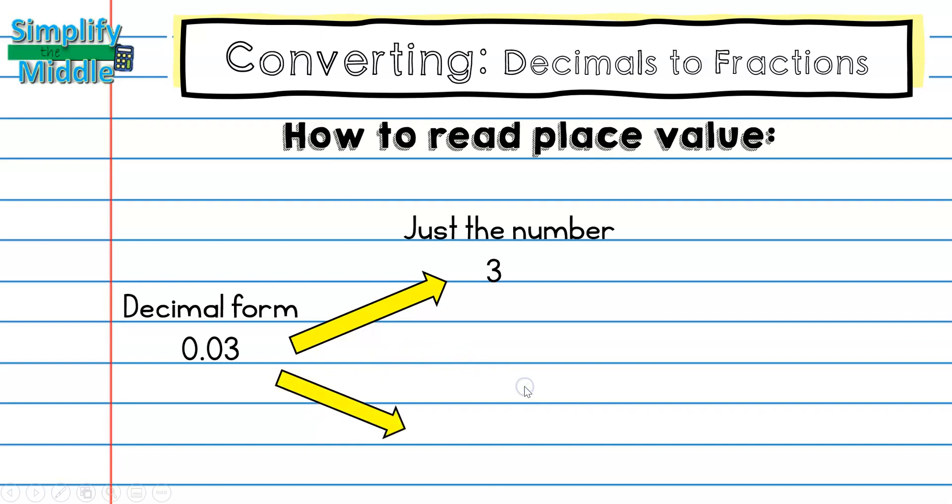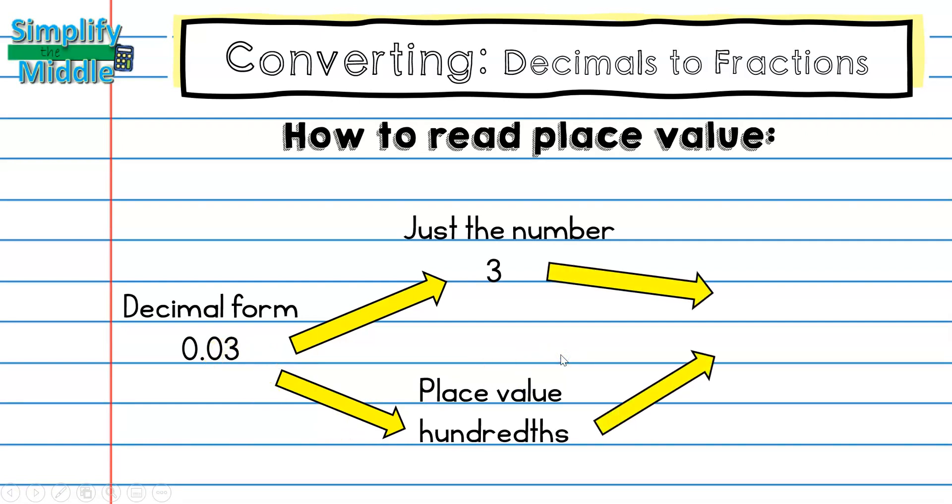On the bottom, the denominator side, I'm going to simply write the place value. And this is in the hundredths place value. Then I will bring it all together. I had 3 as my numerator and hundredths as my denominator. So I would write 100 to represent the hundredths place value.